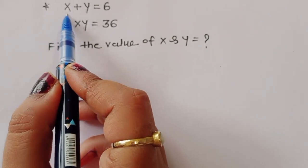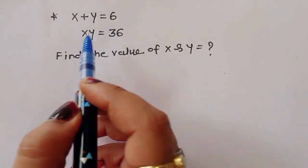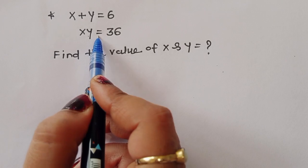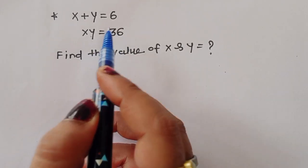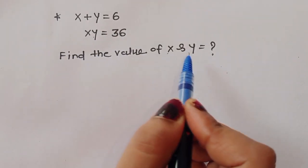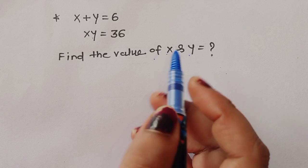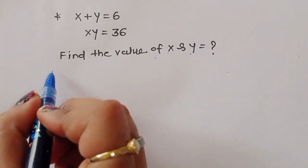The question is: given x plus y is equal to 6 and xy is equal to 36, we have to find out the value of x and y. Let's see the solution.